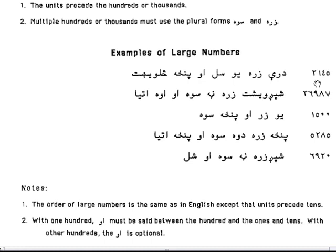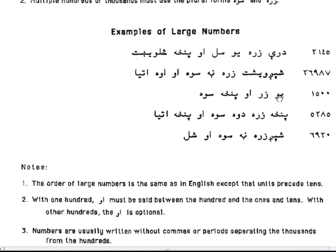Examples of large numbers. 3,145: Dwa-Zara (3000), Yaw-Saw (100), Au-End, Pinza, Sal-Way-Kht. 26,987: Spagwisht Zara (26,000), Na-Saw Sawa (900), Au, Uwa-Atya. Au means 'and.' Uwa-Atya means 87.